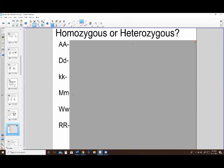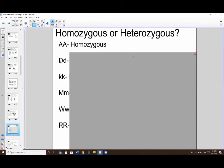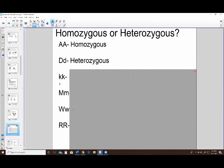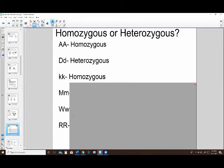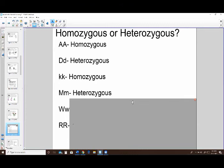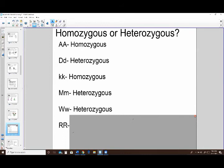So if you look at some examples here of gene combinations, if I have two big A's, those are the same, so this would be homozygous. If I have big D little d, so dominant and recessive, those are different, so that would be heterozygous. For this one, I have little k little k, those are the same, so that would be homozygous. For here, I have big M little m, so dominant recessive, those are different, so this is heterozygous. Big W little w, dominant recessive, those are different from each other, so I have heterozygous. And then big R big R, so two dominant genes, they are the same, so this would be homozygous.